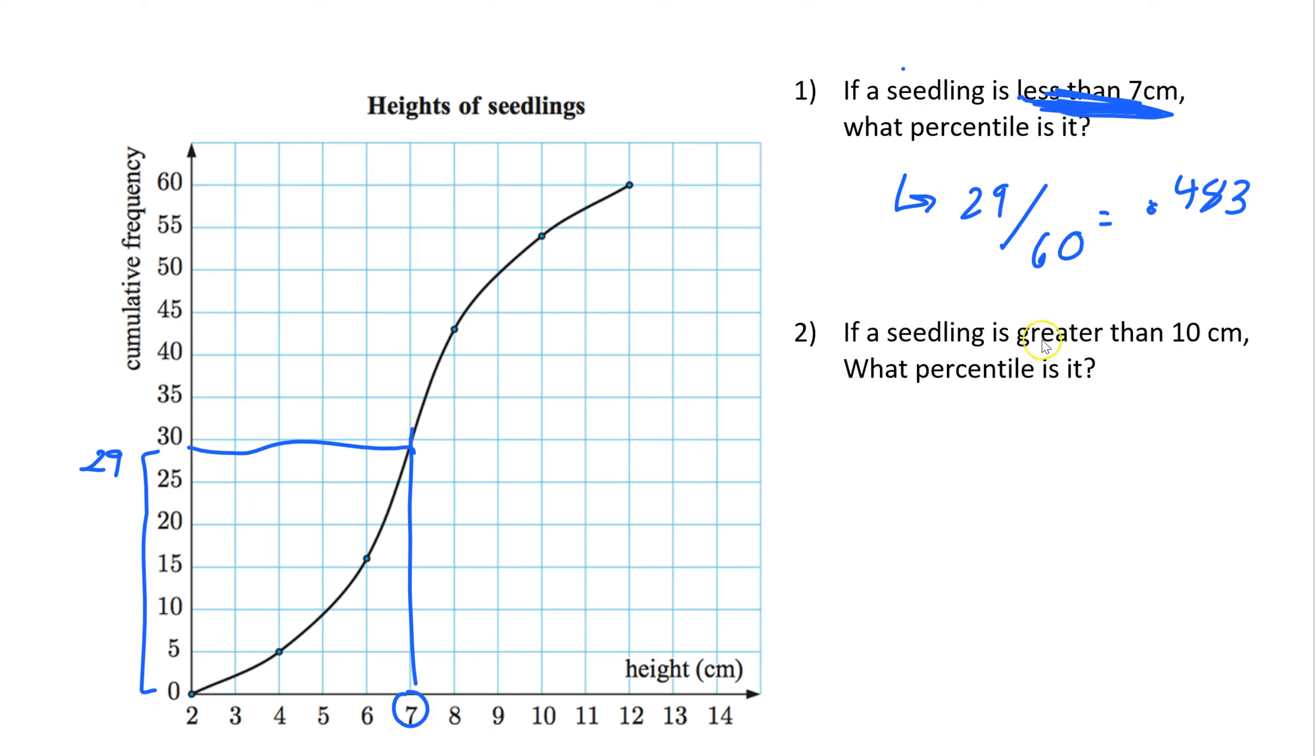Likewise, on number 2, if a seedling is greater than 10. So very important. Greater than, you're going to go from the top. Anytime it says more than or greater than, you have to go from the top. But same idea. So here's 10. They gave me centimeters. So again, you're looking at this part. So there's 10. As always, the main rule here is use the graph. You always have to use the graph. And then from here, go across.